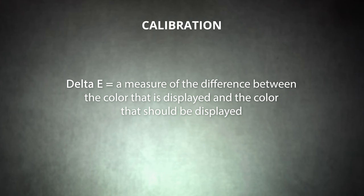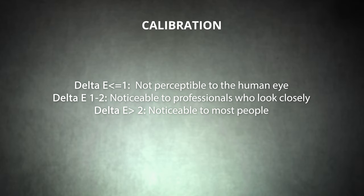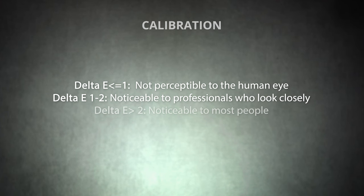A well-calibrated monitor will have good screen accuracy, notated with the standardized measurement Delta E. This tells us the difference between the color that is displayed and the color that should be displayed — the smaller the Delta E value, the better. Values less than or equal to 1 show differences not perceivable with the human eye. Differences at values between 1 and 2 will be noticeable to professionals who look closely, while values above 2 will show differences noticeable to most people. For video work, and especially color correction and grading, look for a monitor rated Delta E 2 or smaller to ensure colors appear as expected.